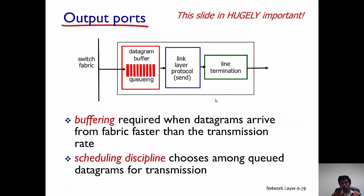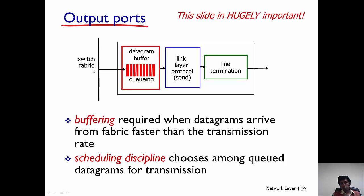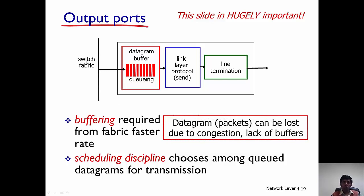Now that we've looked at the input ports and switching fabric, let's look at the output ports. The schematic for the output port is essentially reversed with respect to the input ports. First there is a datagram buffer where queuing can take place, then there is a link layer protocol, and finally packets are sent onto the wire. When packets are directed from the switching fabric to the output port they can get buffered in this datagram buffer, and depending on the speed of the switching fabric, packets can get lost or queues can build up.